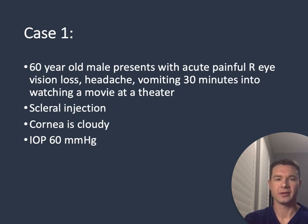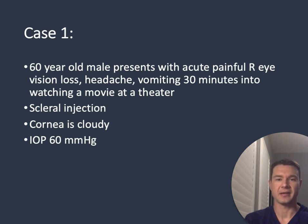Case 1 is a 60-year-old male presenting with acute painful right eye vision loss. He also has a headache and has been vomiting. This started 30 minutes into watching a movie at a movie theater. On exam, he has scleral injection, the cornea is cloudy, and the intraocular pressure is 60 mmHg.